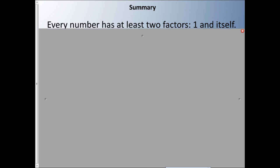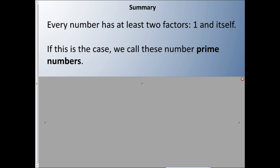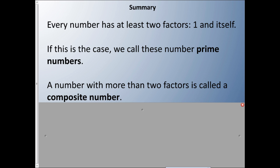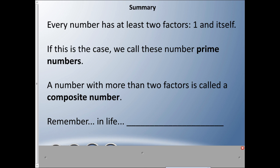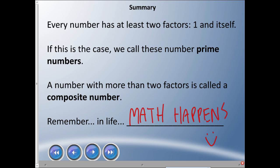In summary: every number has at least two factors — 1 and itself. If that's the case, we call it a prime number. However, if we have more than two factors, we call it a composite number. And remember: in life, math happens! Take care, guys.